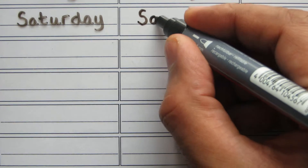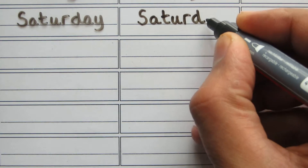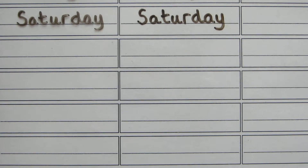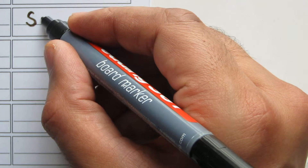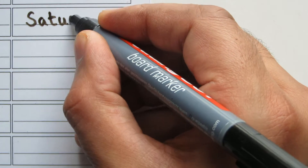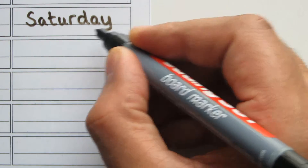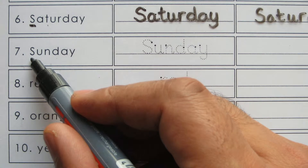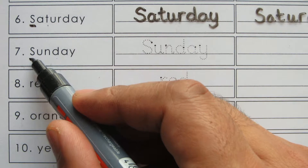S-A-T-U-R-D-A-Y, Saturday. S-A-T-U-R-D-A-Y. On to the last box without looking. Saturday. Capital S, because it's a proper noun. S-A-T-U-R-D-A-Y. The seventh word on this sheet is Sunday. Capital S. S-U-N-D-A-Y. It's a capital S.